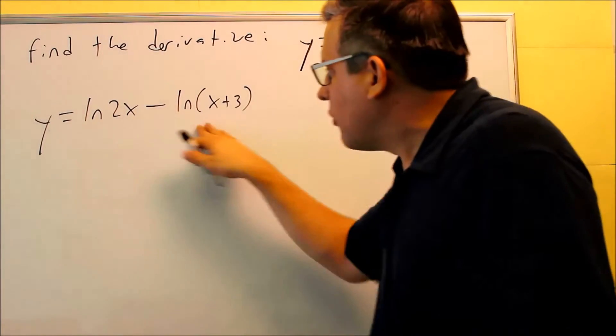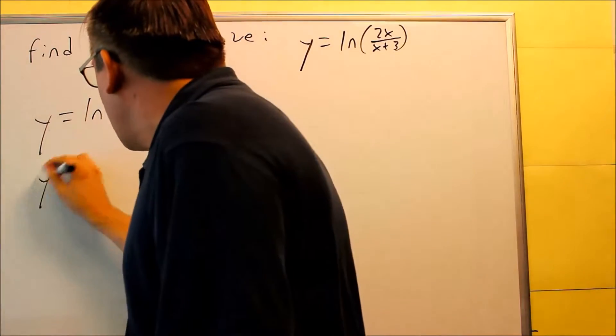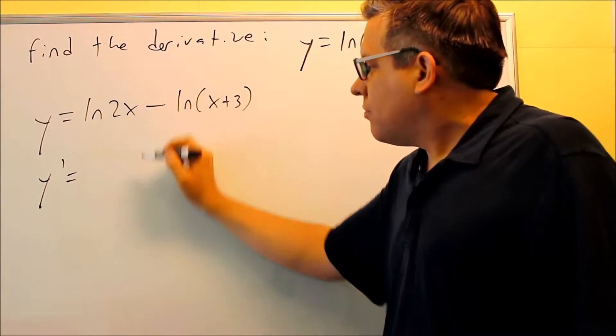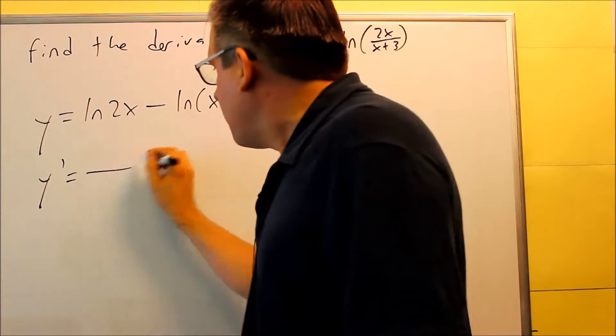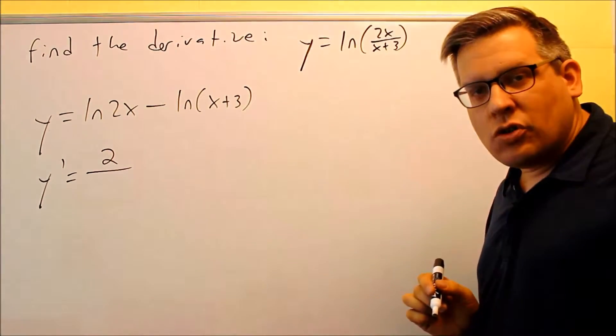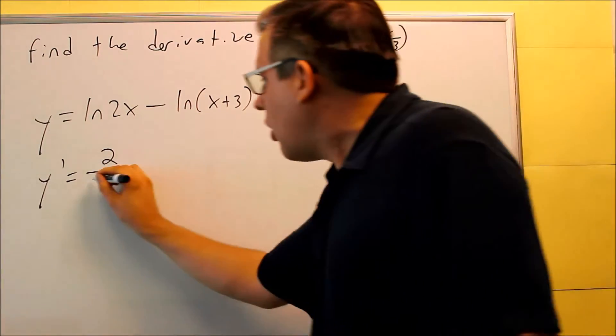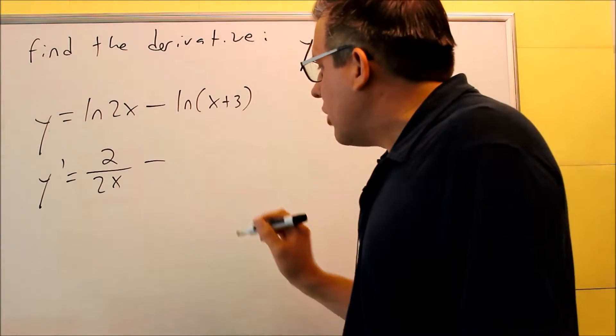So now I can just take the derivative of each of these separately. It's going to be a lot easier problem that way. So when I do y-prime, it's the derivative of 2x over 2x. That's the formula. The derivative of 2x is just 2. That's your u-prime. In this case, u is 2x. All over the original one, all over 2x.